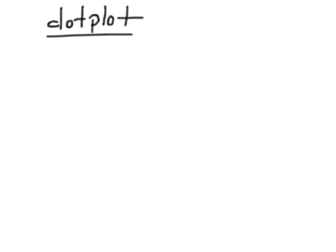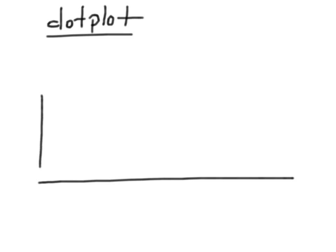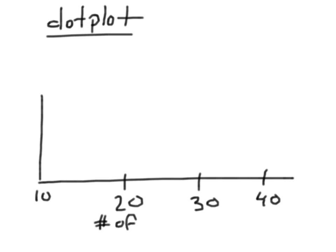A dot plot is a pretty easy idea. You draw yourself a number line. In our data the smallest number is 15 and the biggest is 33, so I'll go from about 10, put 20 over here, 30 over here, 40 over here. Always label your data — so this is number of tomatoes. Then each dot represents one plant, so 15 gets a little dot right there.